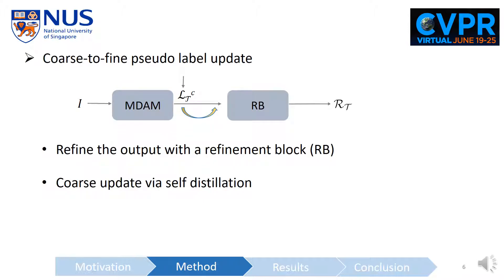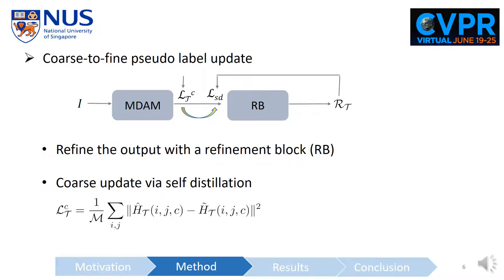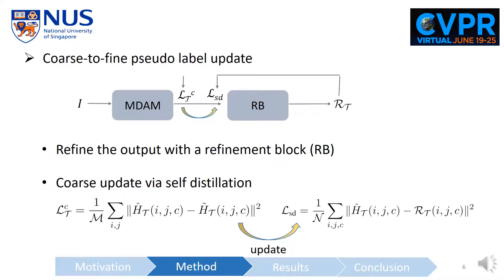The key idea of this work is a coarse-to-fine pseudo label update strategy. We regard the output of the MDAM as the initial estimation and perform refinement with a refinement block. The coarse update is based on a self-distillation loss, where we gradually replace the pseudo labels with the output of the refinement block — in other words, we gradually replace the pseudo label-based loss with a self-distillation loss.